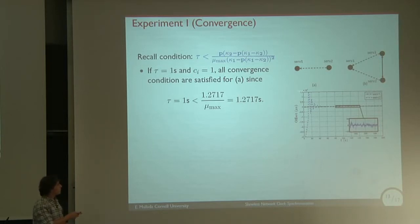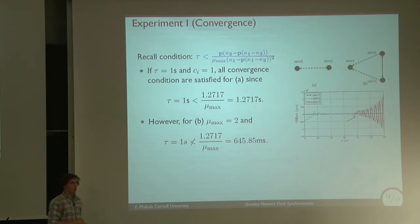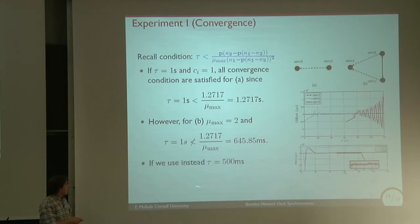However, if you now change to a two-node configuration with a loop between them, it turns out that the same solution is no longer stable, and our constraint is also not satisfied. So the theory matches the experiment. If we change the τ value to a smaller value such that it satisfies the previous condition, then we recover convergence again.